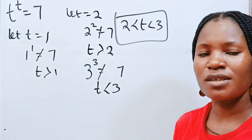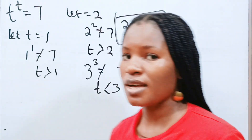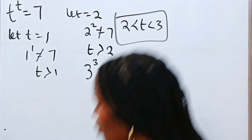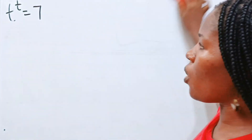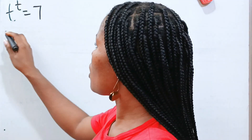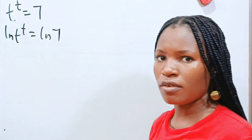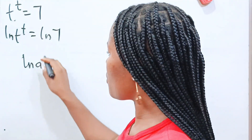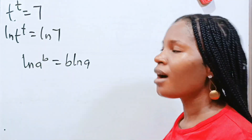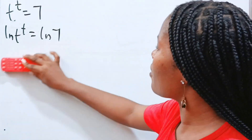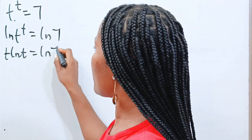But we are asked to get the exact value of t. The only way to solve this is to introduce a natural log to both sides of this equation. So we introduce ln: ln of t to the power of t is equal to ln 7. Now, when you have ln of a raised to the power of b, it is equal to b multiplied by ln a. So we can write this as t multiplied by ln t is equal to ln 7.